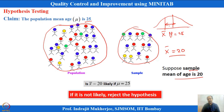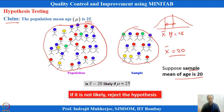I will take only one sample — I do not have the privilege of taking repeated samples. With one sample observation I am getting a mean value of 20. So I have to either prove or disprove the claim: whether 20 is close to 25, or whether it is very far away from 25.